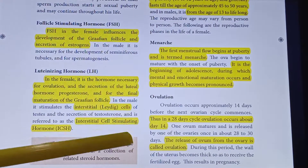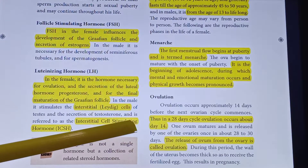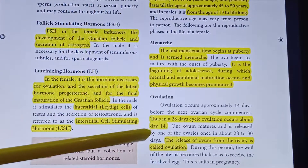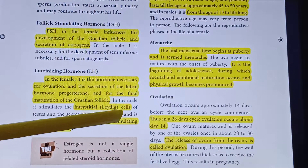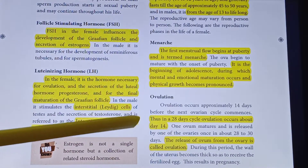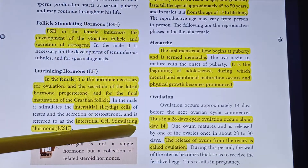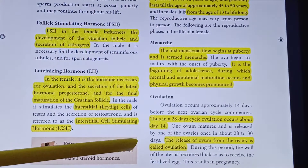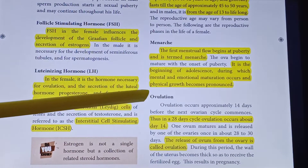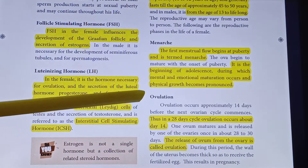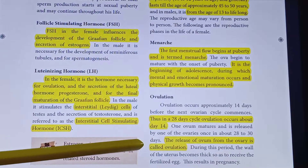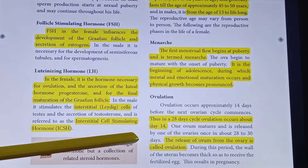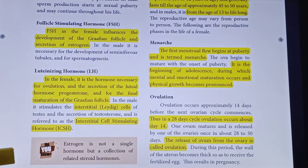Menarche is the beginning of adolescence, during which mental, emotional, and physical growth becomes pronounced. Ovulation occurs approximately 14 days before the next ovarian cycle commences. In a 28-day cycle, on the 14th day, the Graafian follicle matures and the ovum is released. The release of ovum from the ovary is called ovulation.